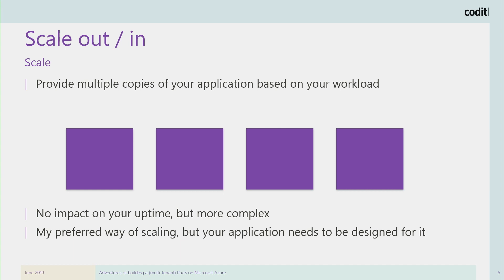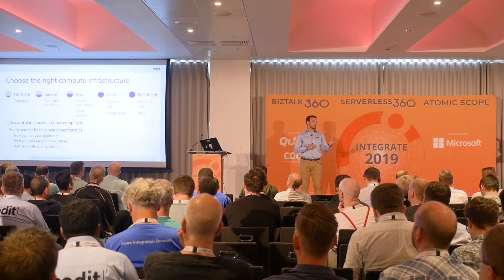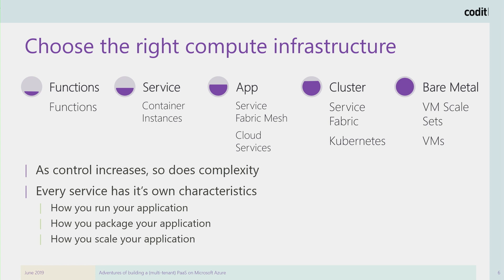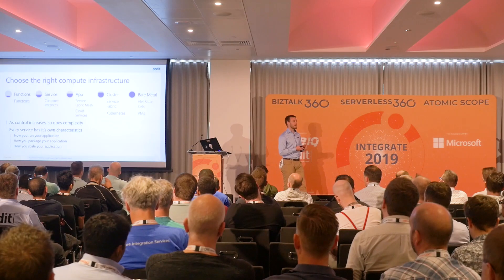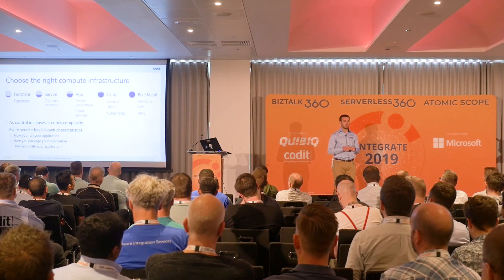But from an application perspective, scaling out is harder because your application needs to be designed that way, and your traffic routing needs to work with it. So scaling is not easy. What about the technology we're using? Scaling is really important when picking your compute infrastructure. On the left side is functions as a service — we don't care about anything, we just run code. On the right, we have bare metal VMs which we fully run, deploy, and maintain ourselves. The more control you need, the more complexity.